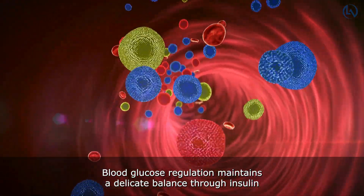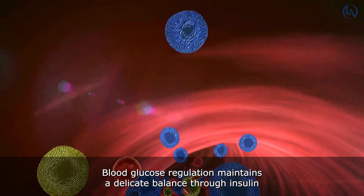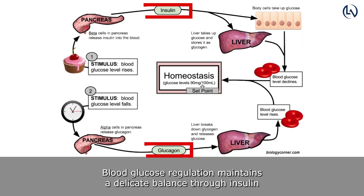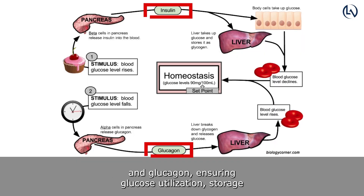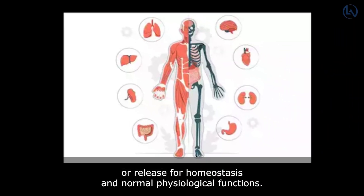Blood glucose regulation maintains a delicate balance through insulin and glucagon, ensuring glucose utilization, storage, or release for homeostasis and normal physiological functions.